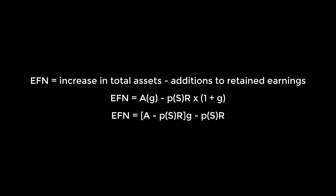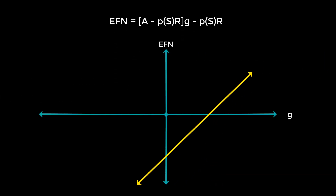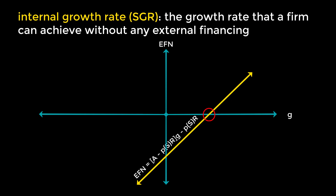If we were to actually plot the relationship with projected growth in sales, G, on the x-axis and EFN on the y-axis, we would get a line which might look something like this. On this graph, there's actually one point of major interest: the x-intercept. It's situated at EFN equals 0 and some growth rate G. This tells us that that growth rate is the maximum growth rate we can achieve without needing any external financing. The rate at that point is known as the internal growth rate, IGR.